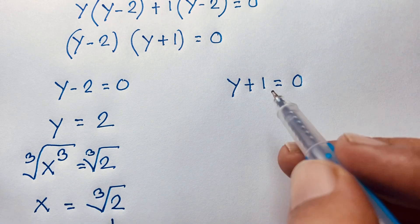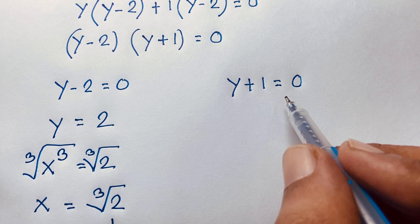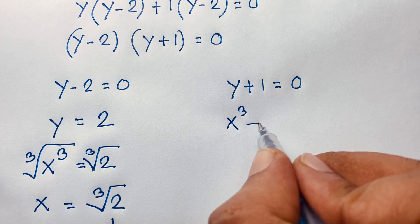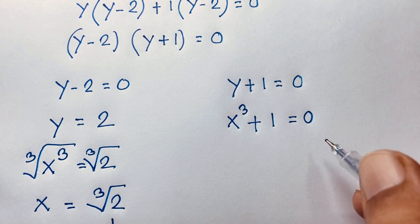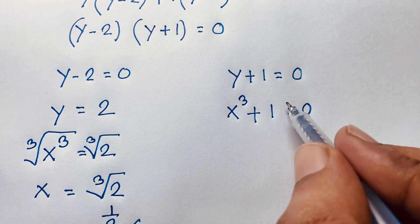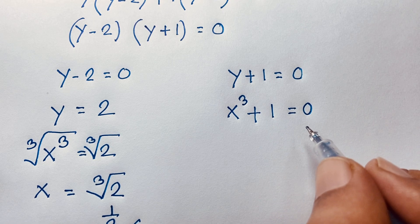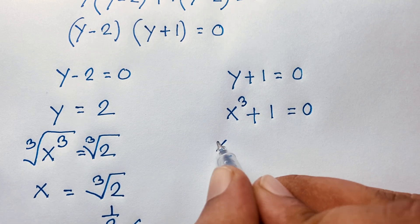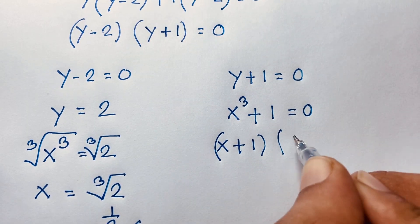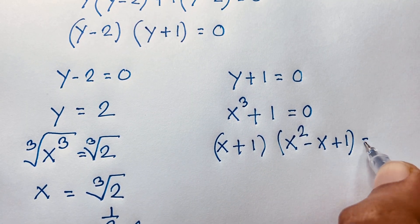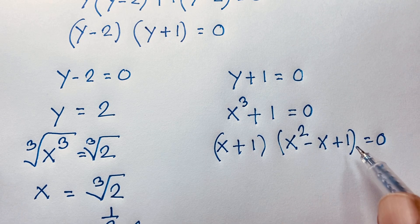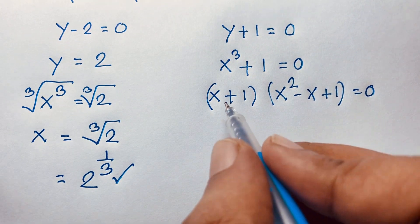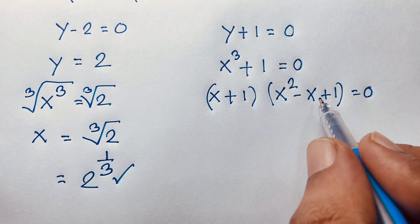Now for the second case, y plus 1 is equal to 0. Since y is x to the power 3, we have x to the power 3 plus 1 is equal to 0. This gives us a cubic equation. We know that a cubed plus b cubed equals a plus b times a squared minus ab plus b squared. Applying this formula, with b equal to 1, we get x plus 1 times x squared minus x plus 1 is equal to 0.